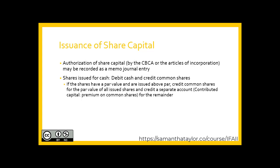If somebody paid above the par value—above the stated amount in the Articles of Incorporation—we would debit cash for cash received, credit the common shares for the par value, and then the remainder would go to a separate account within shareholders' equity referred to as contributed capital premium on common shares.